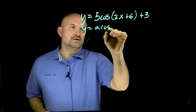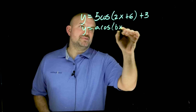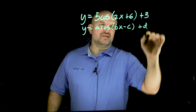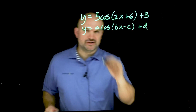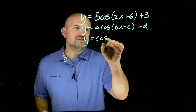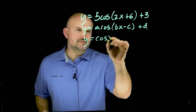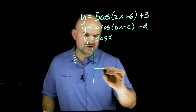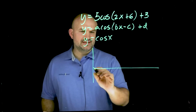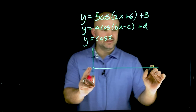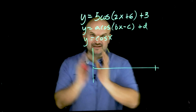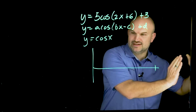We have y equals a cosine of bx minus c plus d — that's going to be all these transformations. But if you're just going to look at what the cosine graph looks like, y equals cosine of x, this initial period is going to look something like this. For the initial period, we're just going to do the positive — I know it goes in the negative and continues going to the right.